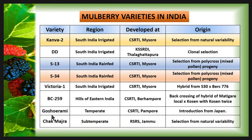The Goswarami variety is mainly planted in the temperate region and is developed by CSRTI Pampur, originating from Japan. The last variety is Chakmajram, mainly cultivated in the sub-temperate region, developed by RSRS Jammu, and originated from natural variability. Along with these varieties, there are many other different varieties of mulberry used for cultivation.